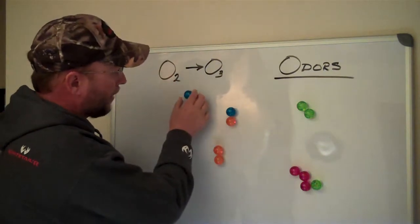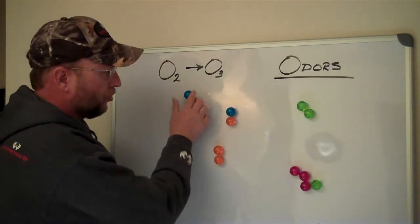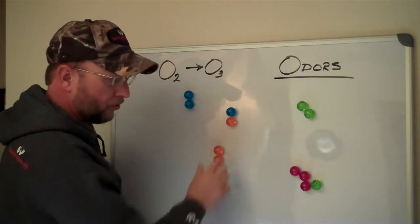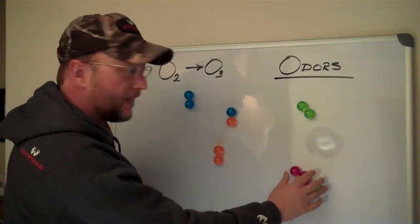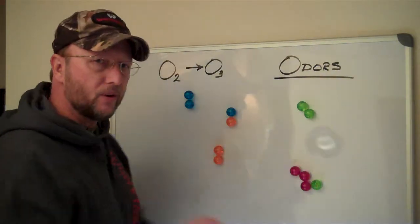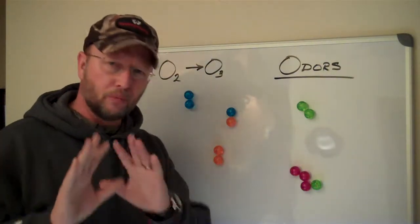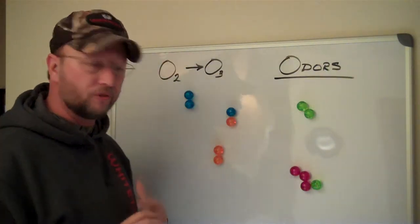So let's assume that I've got an oxygen molecule here, O2, another O2, and a third O2. Over here, we have two foreign odors. Let's say this is gasoline, and let's say that is a pet odor. I know they're atomically not correct, but we're just going to use this for this presentation's sake.